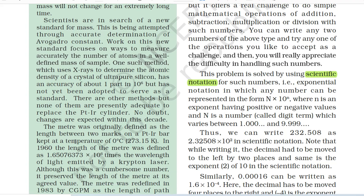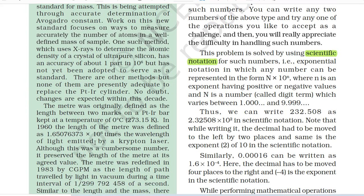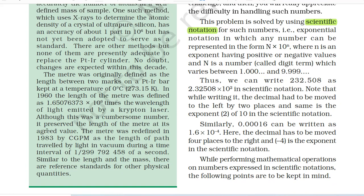The meter was originally defined as the length between two marks on a platinum-iridium bar kept at 0°C. In 1960, the length of the meter was defined as 1,650,763.73 times the wavelength of light emitted by a krypton laser. Although this was a cumbersome number, it preserved the length of the meter at its agreed value. The meter was redefined in 1983 by CGPM as the length of path travelled by light in vacuum during a time interval of 1/299,792,458 of a second. Similarly, there are reference standards for other physical quantities.